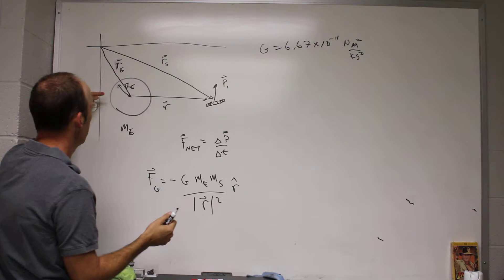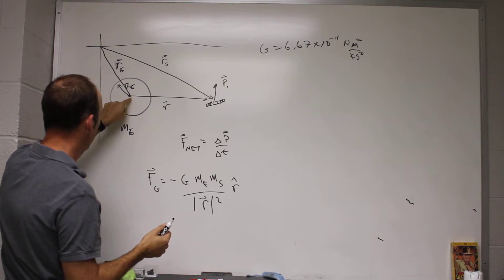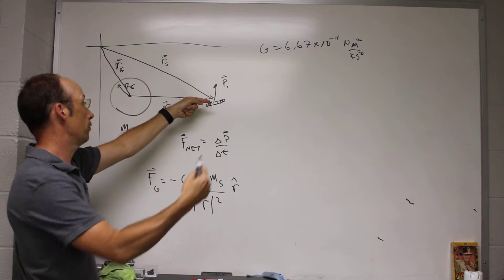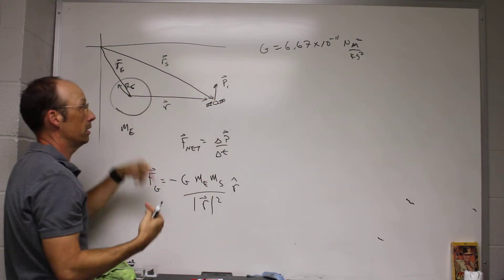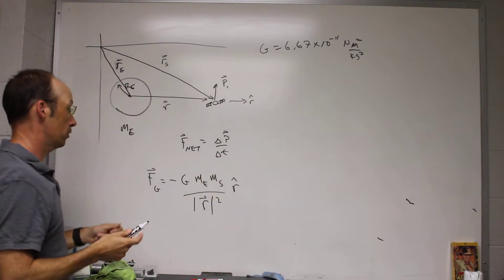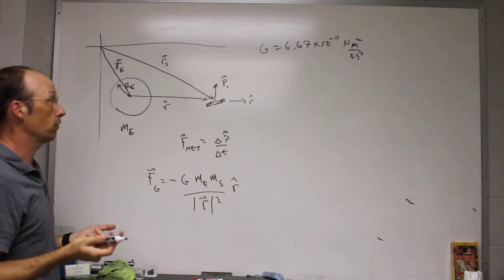The negative sign is because it's an attractive force. So if I have the vector from the Earth to the satellite, then the gravitational force is this way, which is R hat would be that way. Okay. So that's pretty cool. We can calculate the gravitational force.